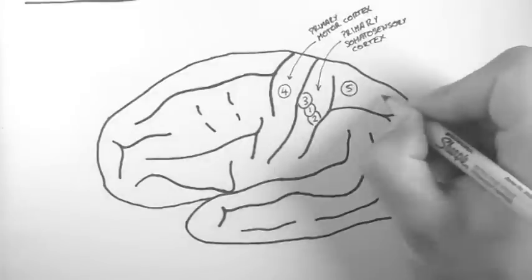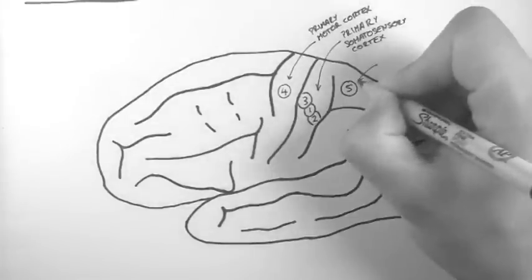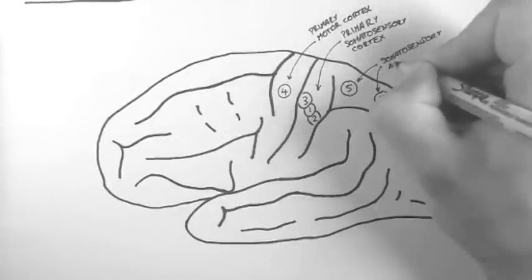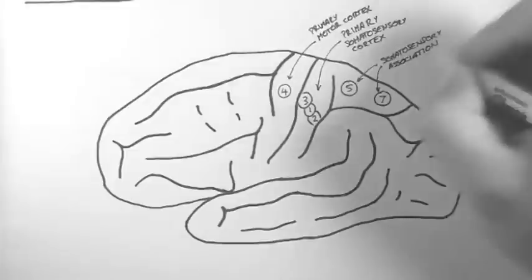Brodman areas 5 and 7, in the superior parietal lobule, make up the somatosensory association cortex.